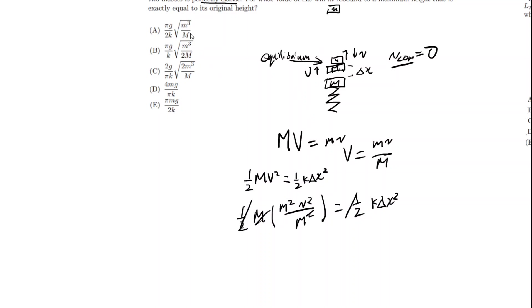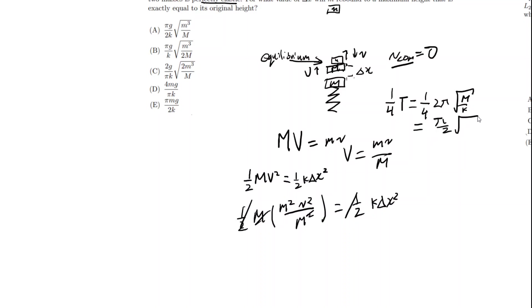We have to use a clever idea: we can find the time between here and here, because we know they collide at the equilibrium point. Since they collide at the equilibrium point, the time it takes for the mass to go from there to the equilibrium is going to be one-fourth of the time period of the oscillation, which is one-fourth times 2π√(M/K), equal to π/2 · √(M/K).